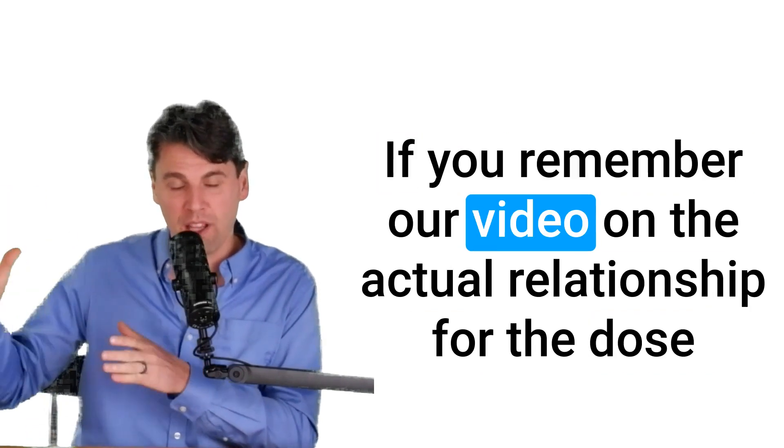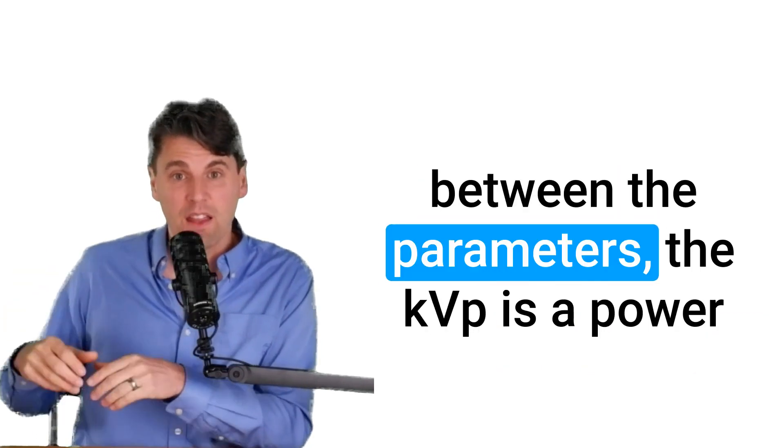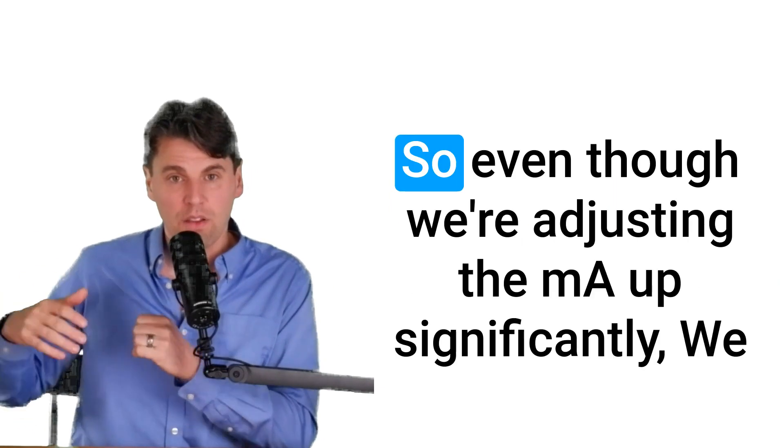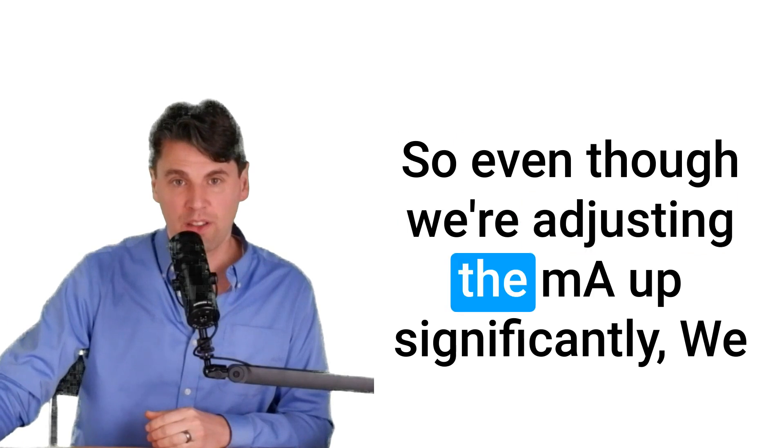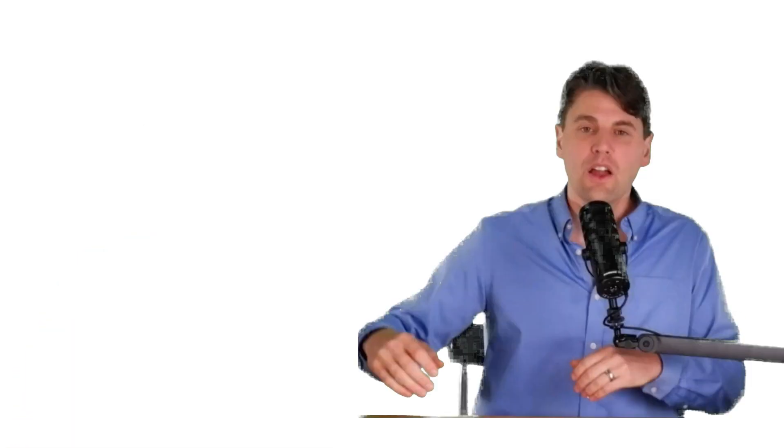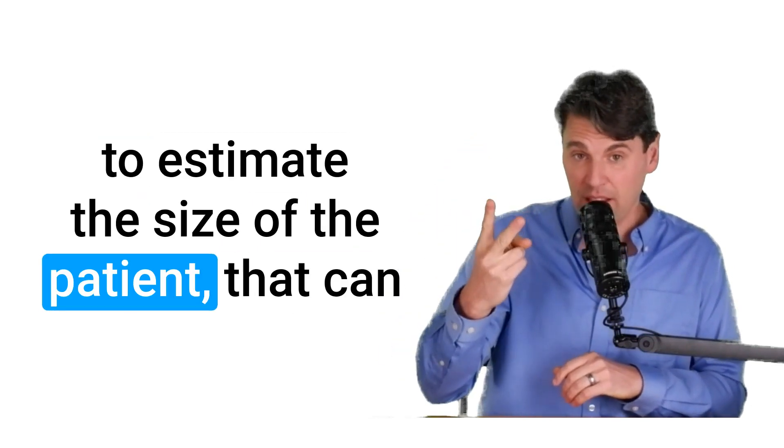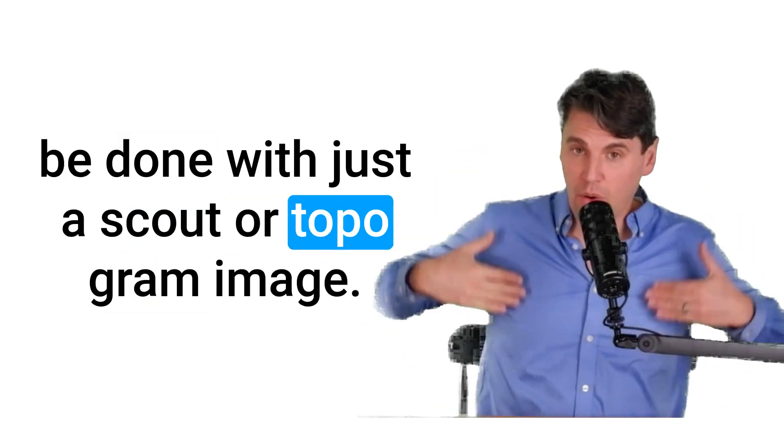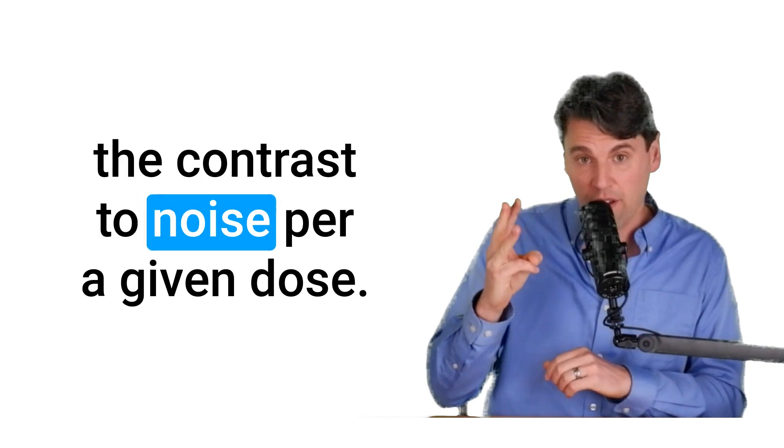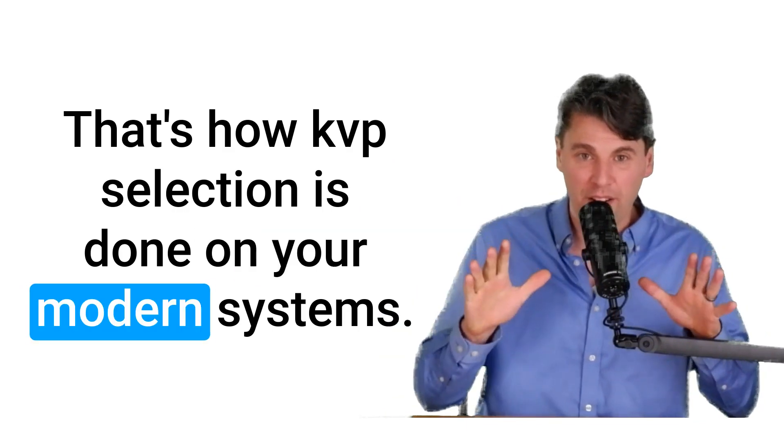If you remember our video on the actual relationship for the dose between the parameters, the KVP is a power law and it goes up much more quickly than the MA. So even though we're adjusting the MA up significantly, we can be doing so and still be saving dose for the patient. So the ability to know your diagnostic task to estimate the size of the patient that can be done with just a scout or topogram image and then to use those things in order to optimize the contrast to noise per given dose. That's how KVP selection is done on your modern systems.